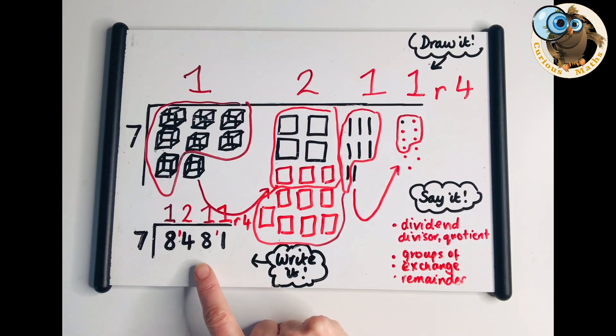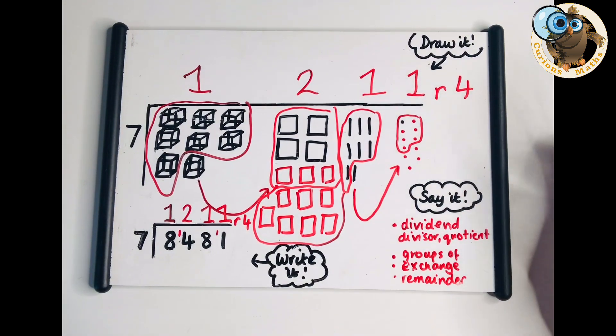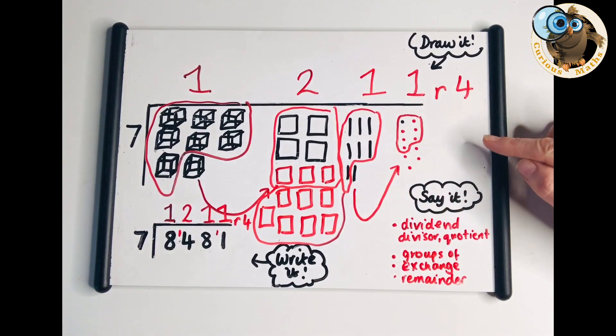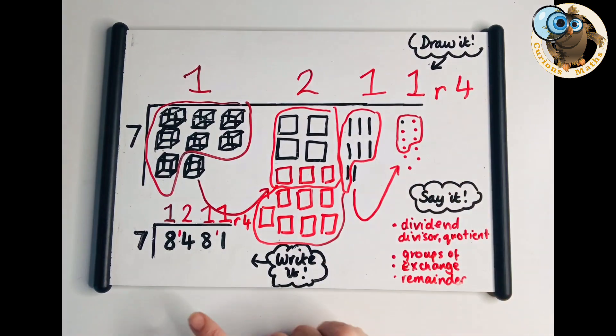Once your children have had lots of practice building it and drawing it, you'll find they'll be able to go straight to that compact method and work efficiently. When they get into Year 6, they need to divide up to a four-digit dividend by a two-digit divisor. By the time they're looking at two-digit numbers, they're using their times table knowledge which doesn't fit with the same model.